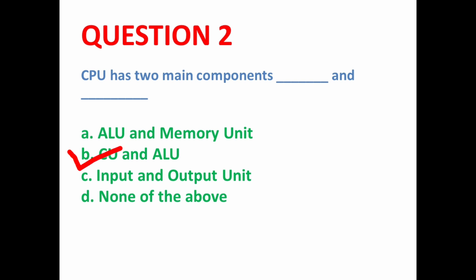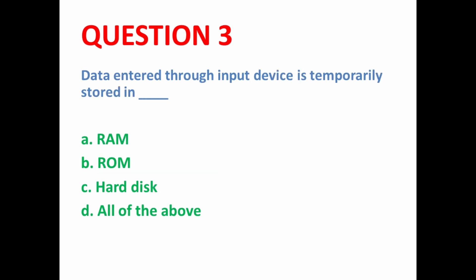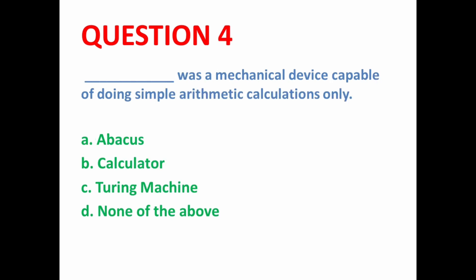Third MCQ: Data entered through an input device is temporarily stored in dash. Whenever we enter data through a keyboard, mouse, or any input device, it gets stored in RAM. We know that RAM is volatile memory — as soon as the computer's power is turned off, data is lost. So temporarily, data entered through an input device is stored in RAM. Here option A is the correct option.